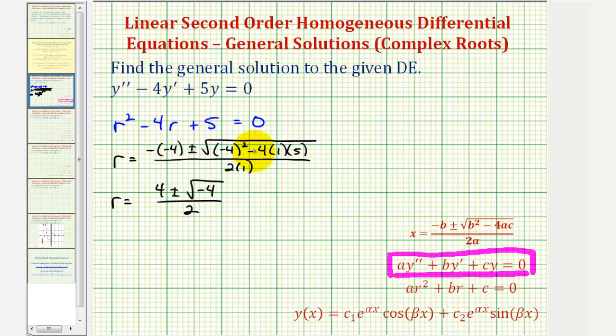Well, the square root of negative 4 would be 2i, so we have 4 plus or minus 2i divided by 2, or r equals 4 divided by 2 plus or minus 2i divided by 2. So this simplifies nicely to r equals 2 plus or minus i.